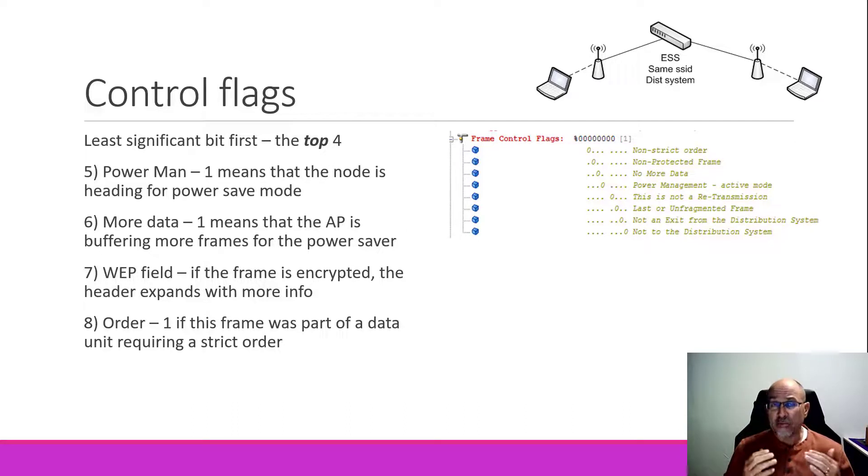If the more data flag is set, when the AP is communicating, that means that the access point is buffering more frames for a particular node. We'll talk a lot more about the access method and how communication within a cell actually works later on, so this will make a lot more sense then. But suffice it to say right now that an access point stores data for any node that is sleeping. That doesn't mean they go to sleep for days. It just means they go to sleep for microseconds or milliseconds. But during that time, the access point has to store all of their data.